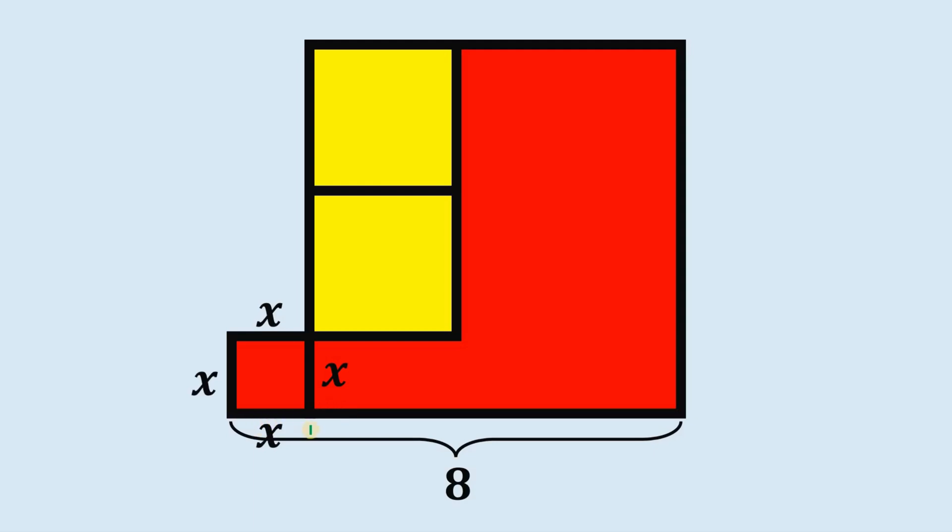Since this is x, therefore the side of this big red square simply equals 8 minus x, so this side is also 8 minus x.